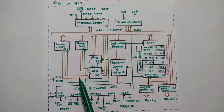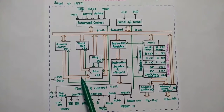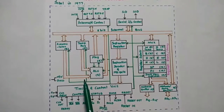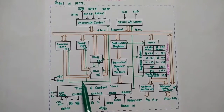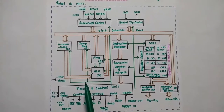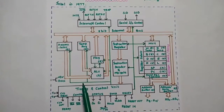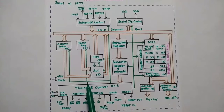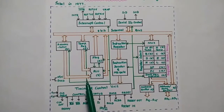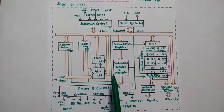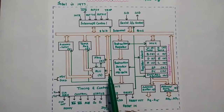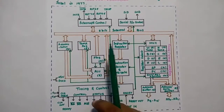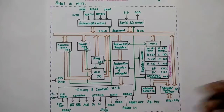A bus is a group of lines which can carry data as well as address. If it carries data, it is called the data bus, and it is bidirectional. If it carries the address, it is called the address bus, and it is unidirectional. Since the 8085 is an 8-bit microprocessor, it uses an 8-bit internal bus.